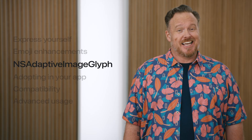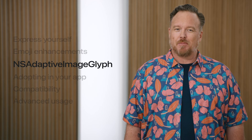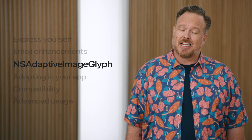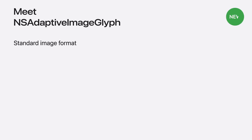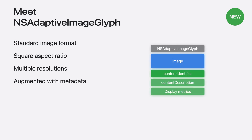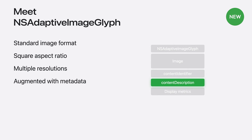So how does this work? Introducing NSAdaptiveImageGlyph, a brand new API to support using Genmoji and other personalized images just like a standard emoji. NSAdaptiveImageGlyphs are powered by a standard image format in a square aspect ratio with multiple resolutions, bolstered by additional metadata such as a globally unique and stable identifier, a content description that can be used for accessibility, and alignment metrics to allow proper layout and placement of images so they can be used with and formatted alongside regular text.